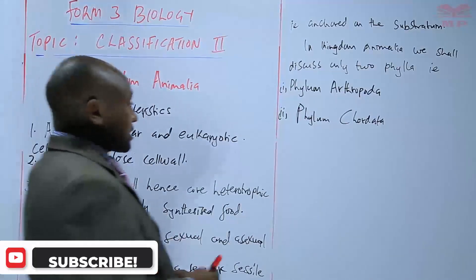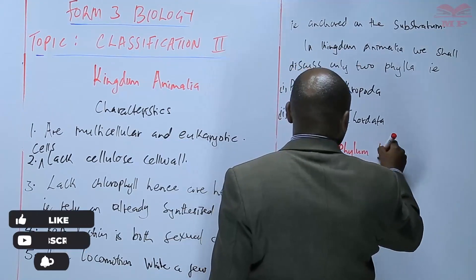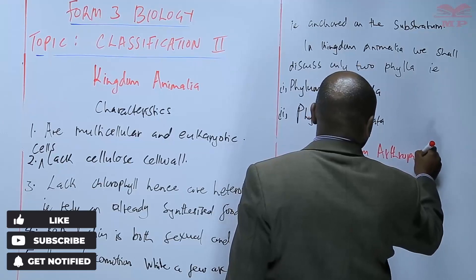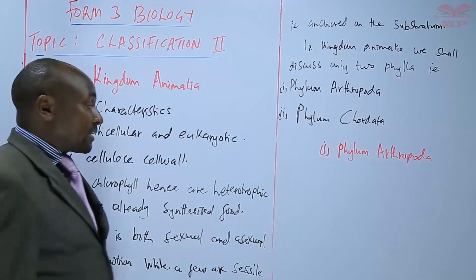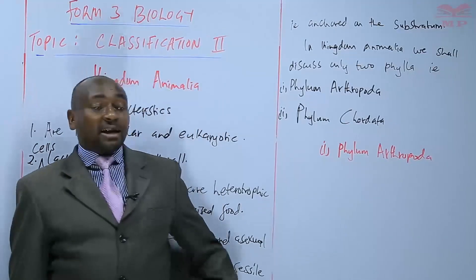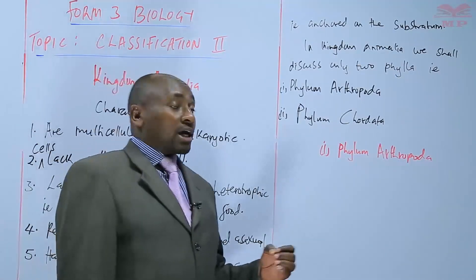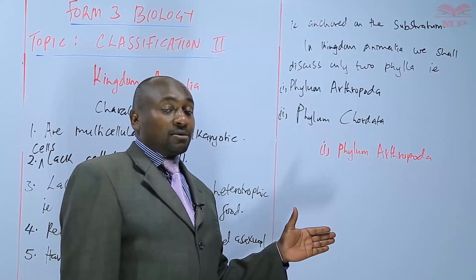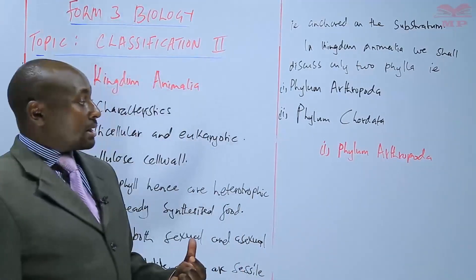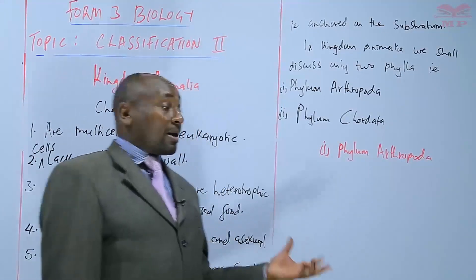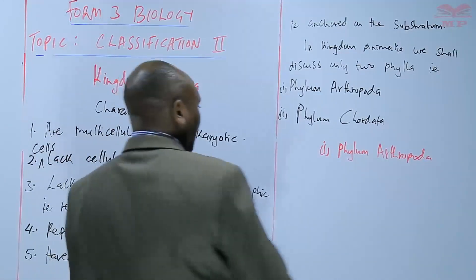Starting with number one, which is the Phylum Arthropoda — the phylum that consists of the arthropods. The arthropods can either be arachnids, like spiders and mites, or we can have Insecta, where we have insects, or crustaceans like crabs. All of these are members of the Phylum Arthropoda. First of all, we look at the characteristics.